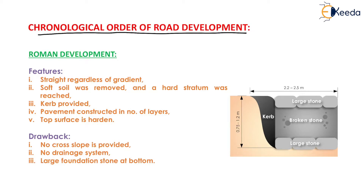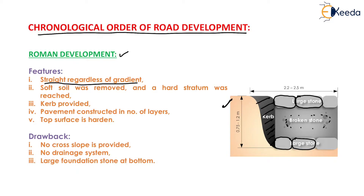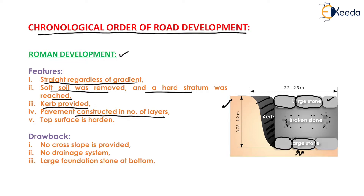Now we will understand the chronological order of road development. The first is Roman development. This is the cross-section of a road according to Roman development. The features are: first, straight alignment regardless of gradient — each layer is provided straight regardless of soil gradient. Second, soft soil was removed until a hard stratum was reached. Third, a curb was provided to separate the pavement. Fourth, the pavement was constructed in a number of layers — surface course, sub-base course, base course, etc. Fifth, the top surface was hardened using large stones.